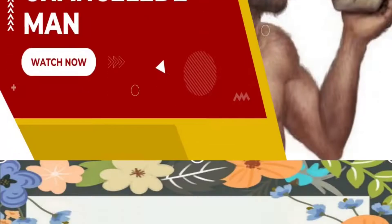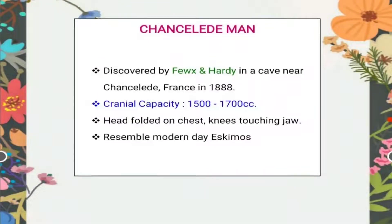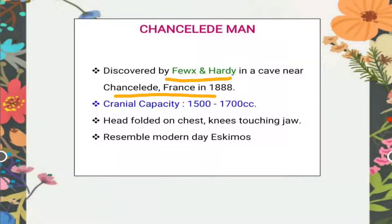The Chancelade man was discovered by Pukes and Hardy in a cave near Chancelade, France. Chancelade is a place which lies in the Dordogne region of France, similar to Cro-Magnon. Pukes and Hardy discovered Chancelade man in the year 1888.